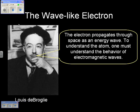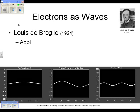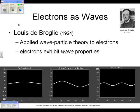What de Broglie did was he said: if a wave such as light can act like a particle — a photon — then particles should also act like waves, and we should be able to describe them. That was 1924. He said that electrons, and actually all particles, must act like a wave and have the same behavior.